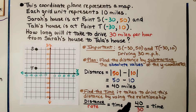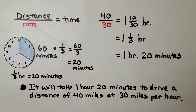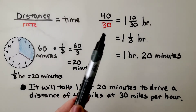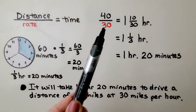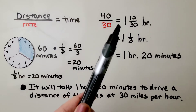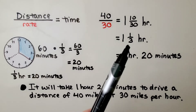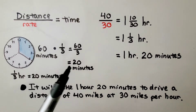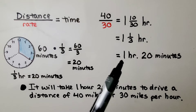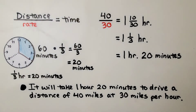The distance is 40 miles and the rate is 30 miles per hour. 40 divided by 30 is 1 and 10-thirtieths of an hour, which simplifies to 1 and one-third hours. A third of an hour is 20 minutes, so that would be 1 hour 20 minutes. It will take 1 hour 20 minutes to drive a distance of 40 miles at 30 miles per hour.